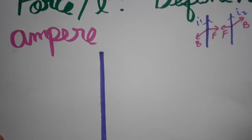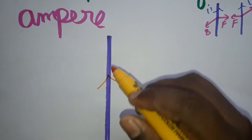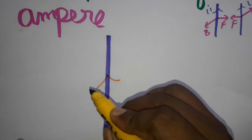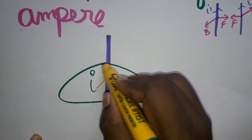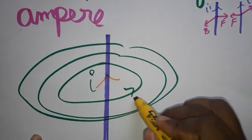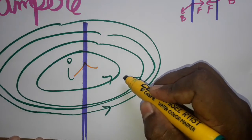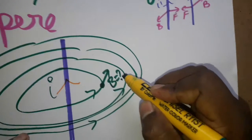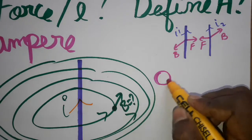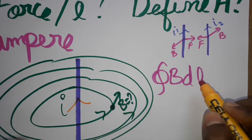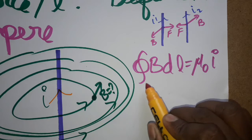We will see what magnetic field is produced around a straight current-carrying conductor. The current is flowing upwards. Using the right-hand thumb rule, the magnetic field is produced in circular form around the wire. I am using Ampere's circuit law to find what magnetic field is produced here. Ampere's circuit law states: the closed integral of B·dl equals mu-naught times i.